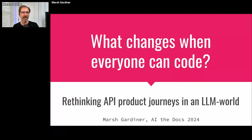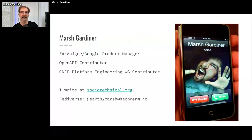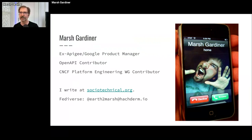This is 'What Changes When Everyone Can Code and Rethinking API Product Journeys in an LLM World.' I'm Marsh Gardner. I spent a number of years at Apigee and Google as a product manager.